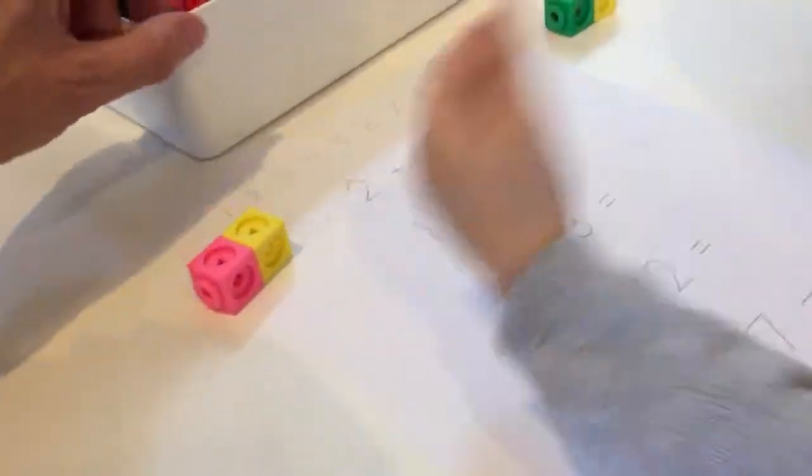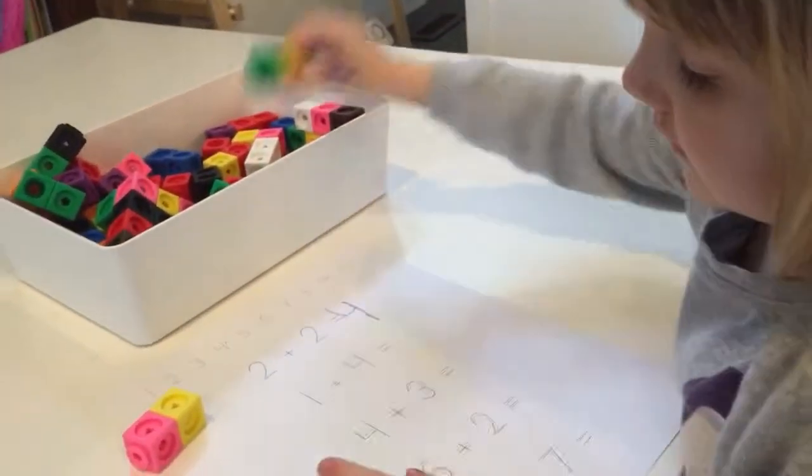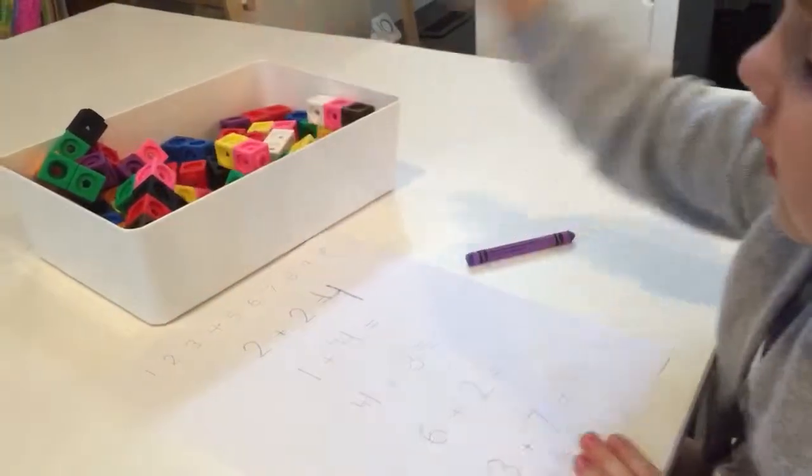Good job. Where's the four on the number line? Good. Okay. Blocks back, crayon down. Blocks back, crayon down. All right.